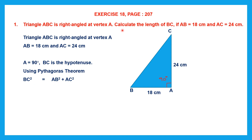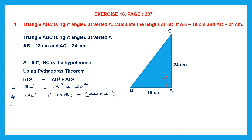With this formula, we can calculate the length of BC. So BC² = AB² + AC². AB is 18 centimeters, so that is 18², plus AC is 24 centimeters, so that is 24². So BC² = 18 × 18 + 24 × 24. 18 × 18 is 324 plus 24 × 24 which is 576. So BC² = 324 + 576, which equals 900.